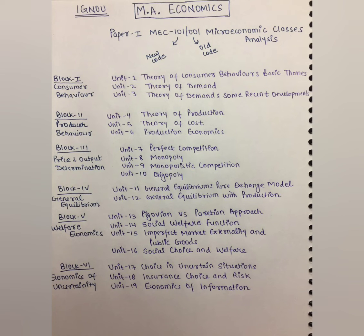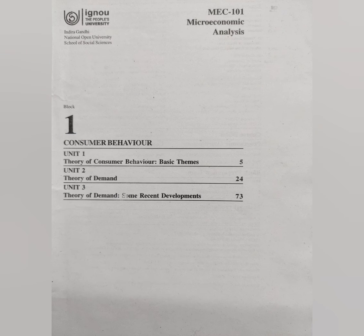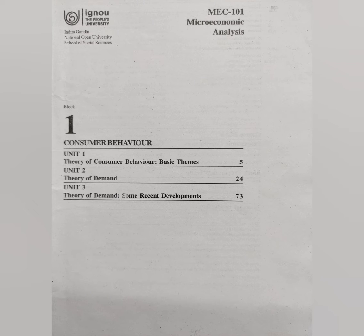Moving forward, let's discuss each block in detail. In block 1, we have block 1 dedicated to consumer behavior. As we know, consumers are representatives of the demand side of the economy. In this particular block, we will see how consumers make decisions that lead to utility maximization.